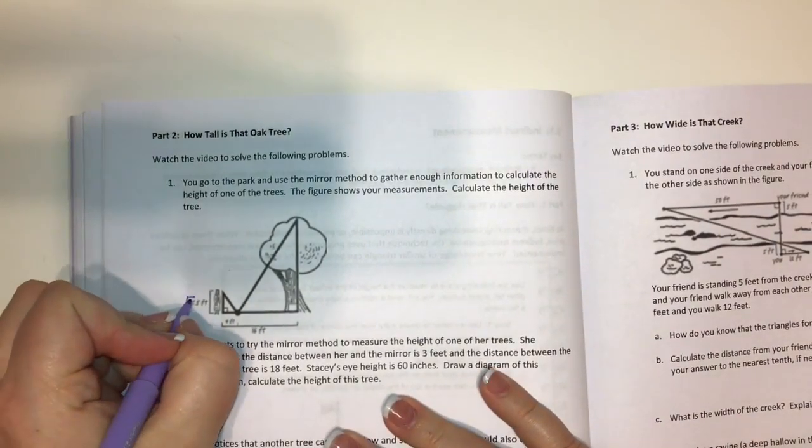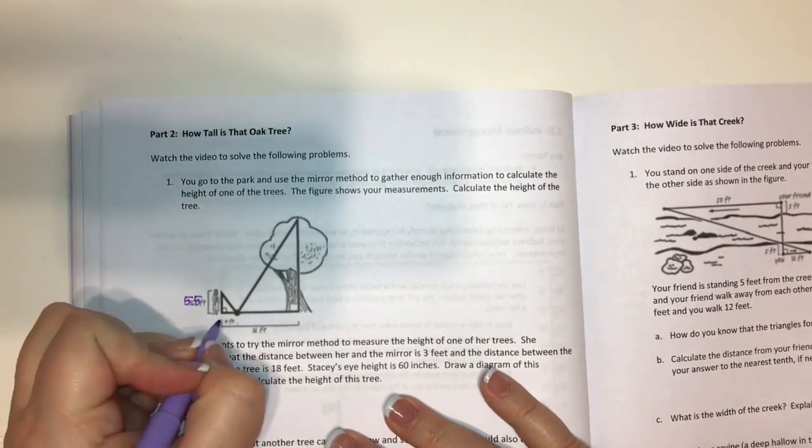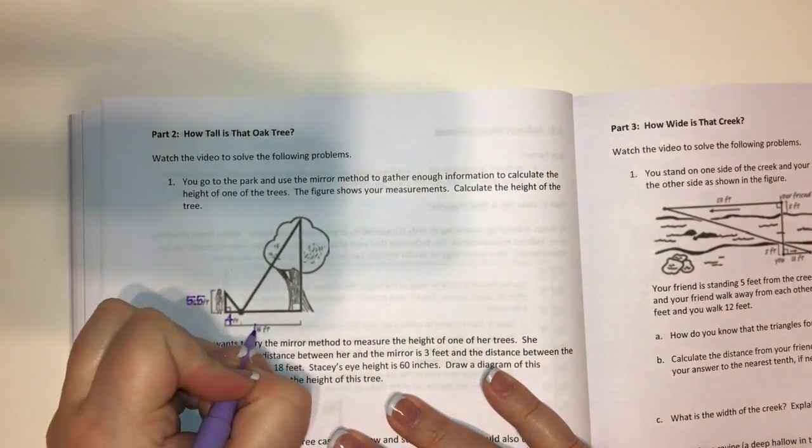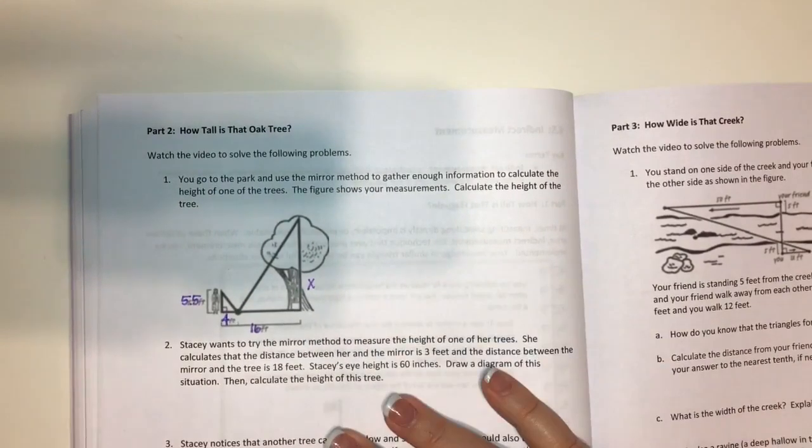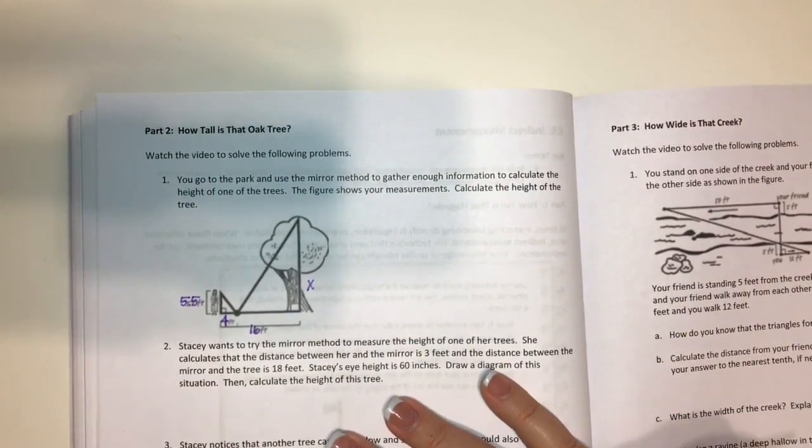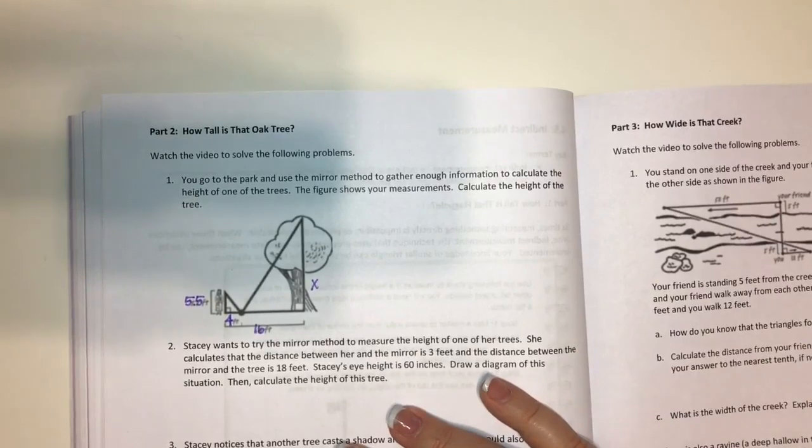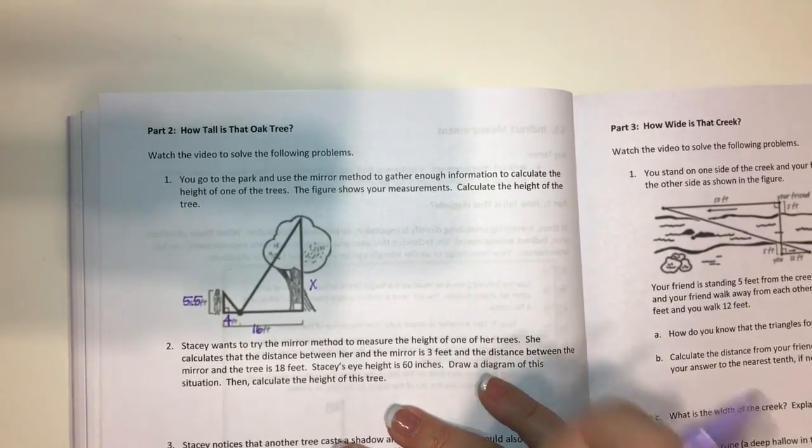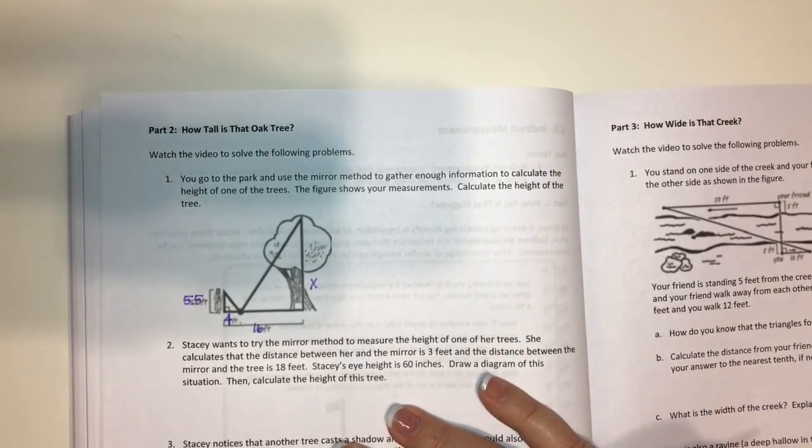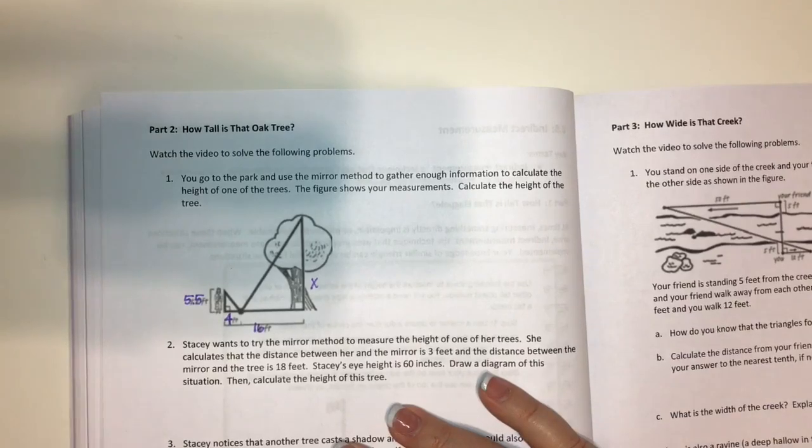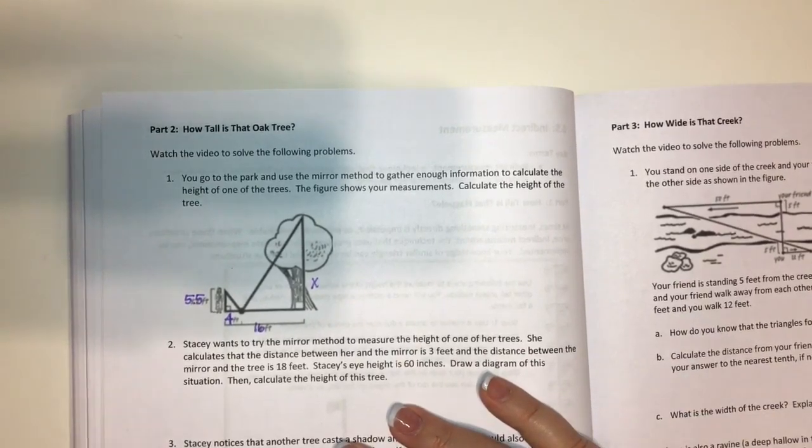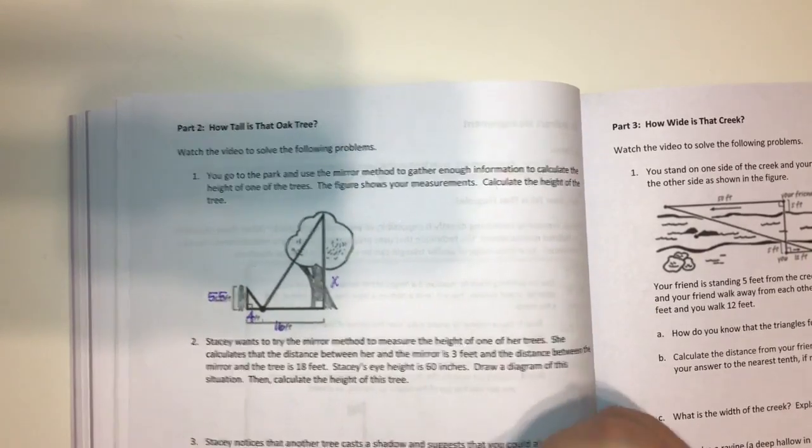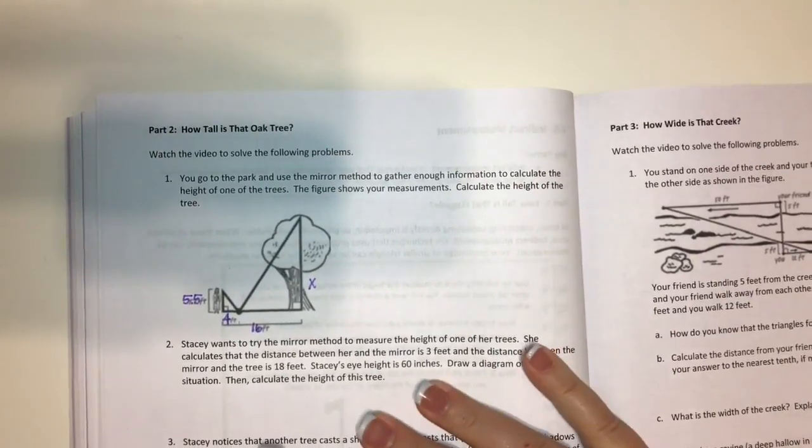So this right here is 5.5 and this is 4 and this is 16 and over here is X. Now, when we're using indirect measurement we are using similar triangles. And if you remember, corresponding sides of similar triangles are proportional. So we can set up a proportion. We've got to make sure that we set up the right corresponding sides though.